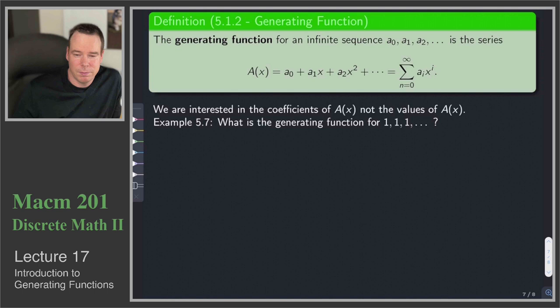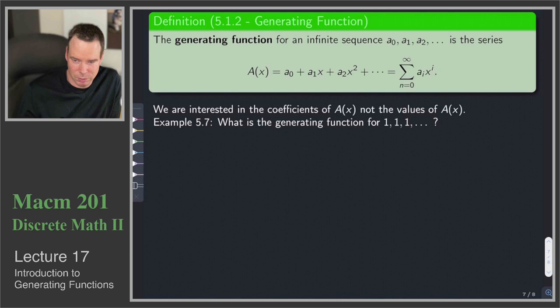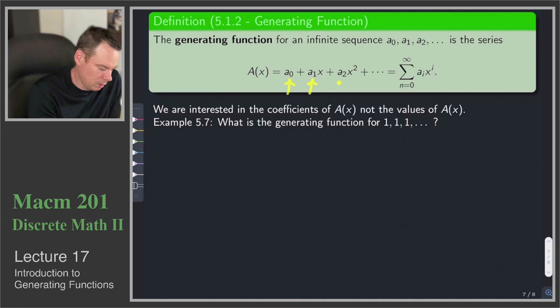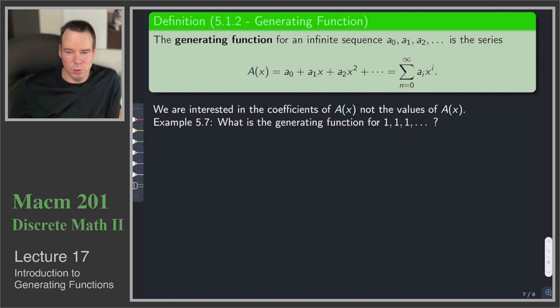What is a generating function? The idea is we still have a sequence a₀, a₁, a₂, … representing some counting sequence — the number of ways to do something for 0, 1, 2, etc. We take this sequence and stick the terms in as coefficients of a polynomial: a₀ + a₁x + a₂x² + ⋯. That infinite series is what we call a generating function for the sequence.